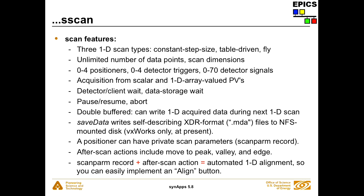There's no real limit to the number of data points or scan dimensions. You can have zero to four positioners, zero to four triggers, and zero to 70 detector signals. You can acquire from scalar or array-valued PVs. It's double-buffered, so you can acquire a new scan while the previous scan is still being written to disk. An underused feature: after a scan you can tell the scan record to look at the data in one particular detector and find a peak, edge, or feature, and automatically send the positioners to that position — enabling automatic alignment.